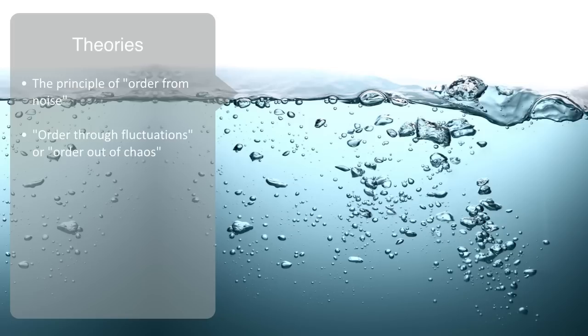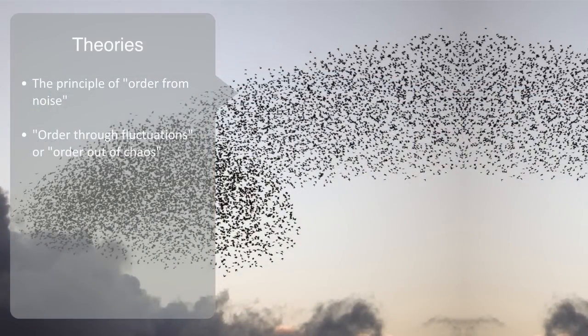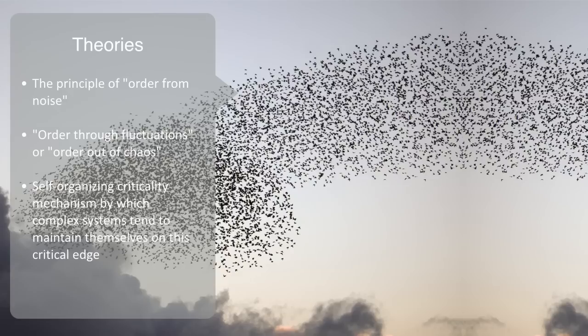Researcher Per Bach also looked at this phenomenon in terms of what he calls self-organizing criticality, the mechanism by which complex systems tend to maintain themselves on this critical edge.